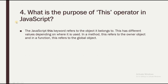The fourth question is: what is the purpose of the 'this' operator in JavaScript? The 'this' keyword refers to the object it belongs to — the current object. It has different values depending on where it is used. In a method, 'this' refers to the owner object, and in a function, 'this' refers to the global object.